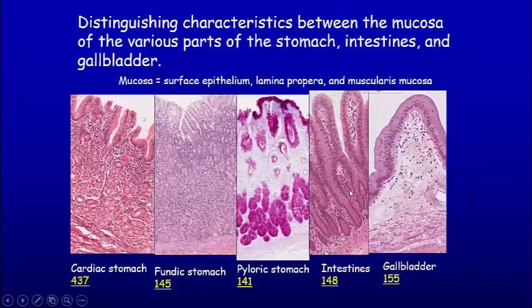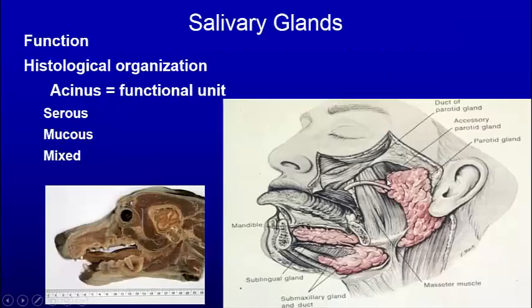Here we can see the simple columnar epithelium — it's really pumping fluid. Junctions are present and spaces open out through there. Sodium is being pumped out and that pulls the water out, reducing the amount of fluid in the bile itself. So we have distinguishing features of the mucosa along the GI tract: cardiac stomach has glands; fundic stomach has parietal and chief cells; and in the gallbladder we have simple columnar epithelium with the capability of pumping fluid out the bottom of the individual cells.